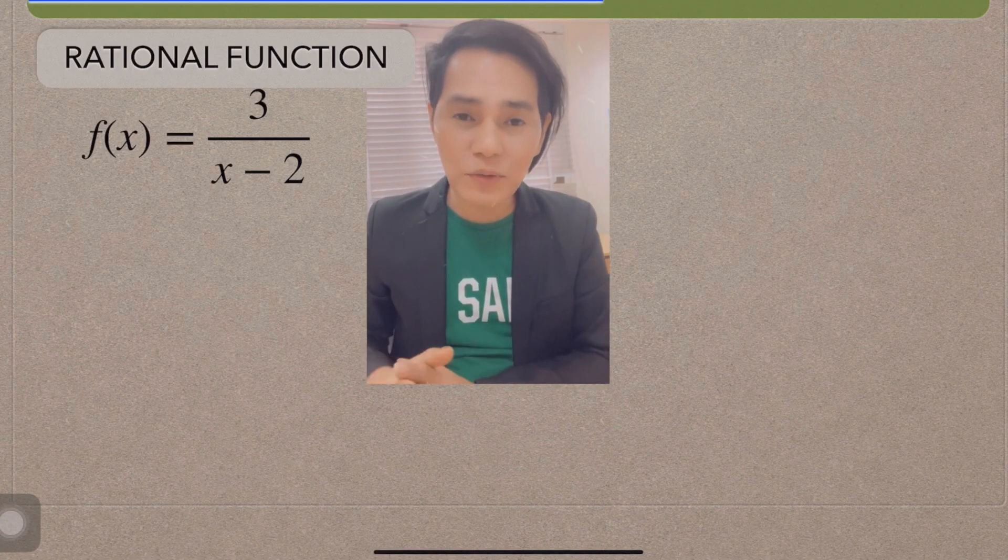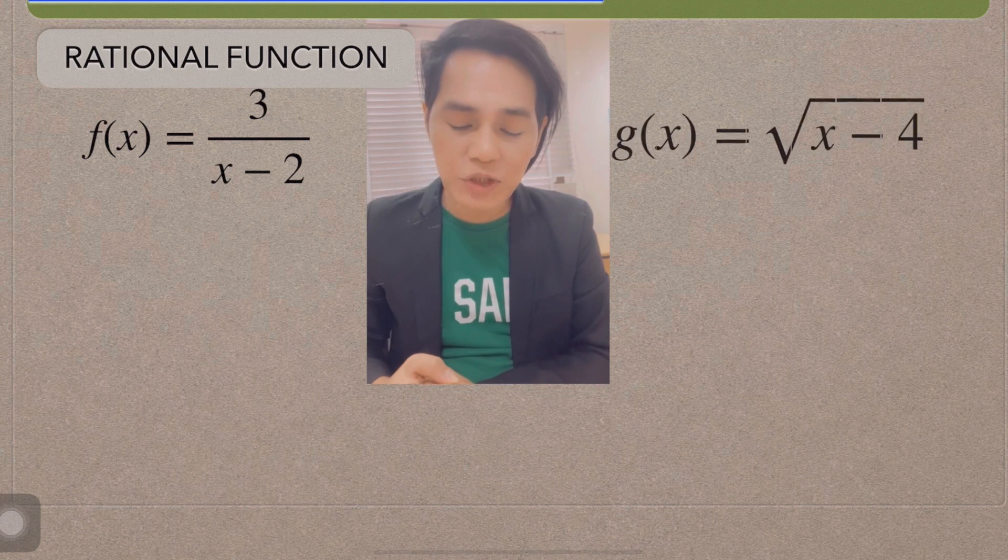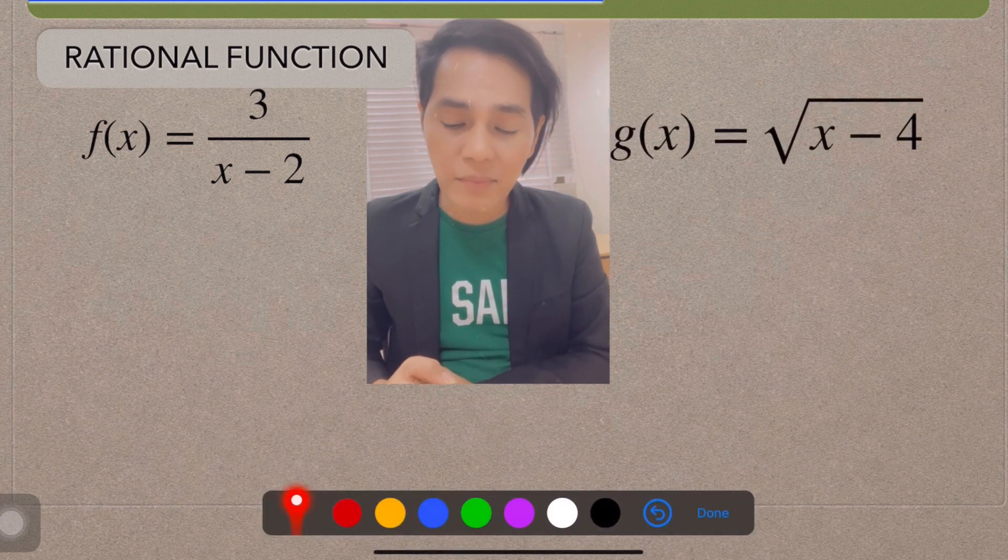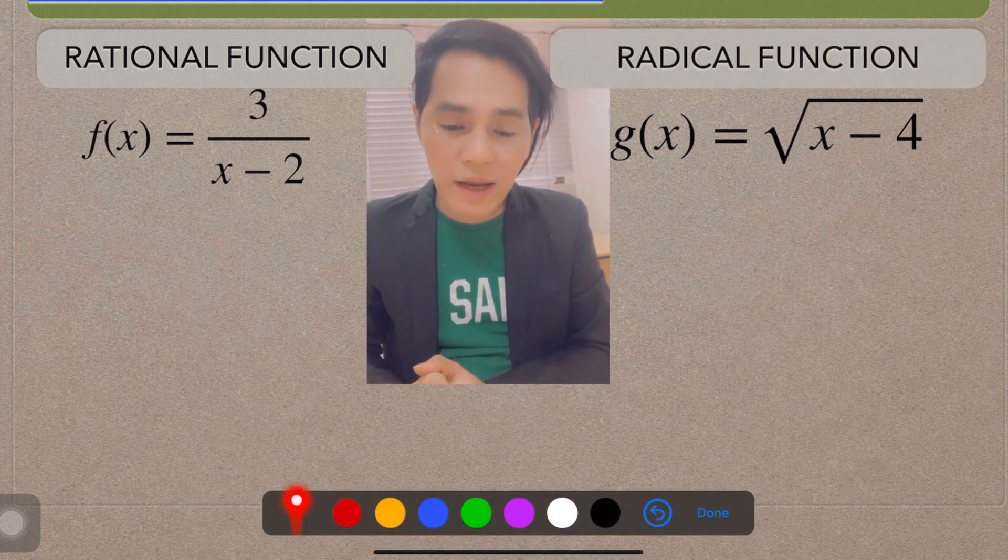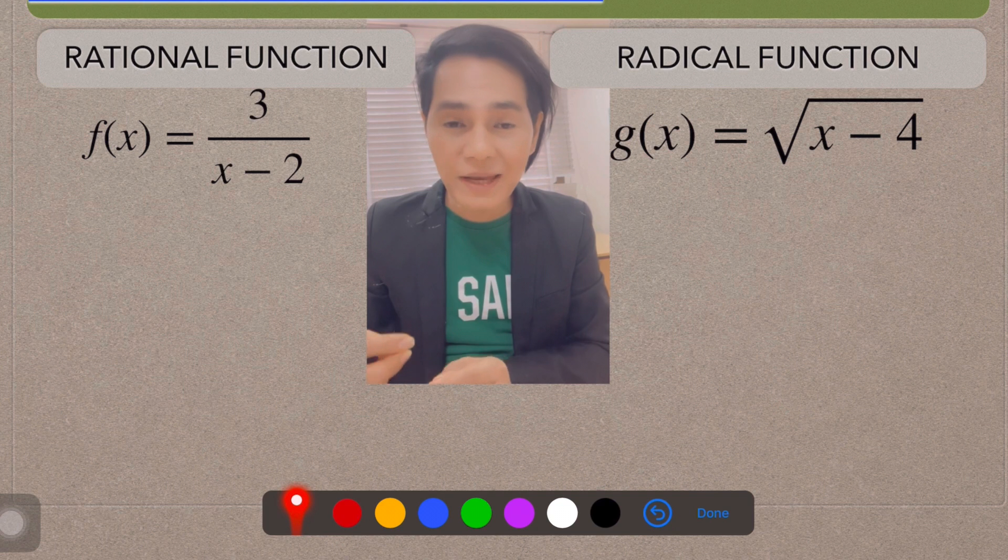Now I have here another function. Look at this. This g(x) is equal to the root of x minus 4. Do you recognize this function? And this is an example of a radical function, wherein finding the square root of a negative number is not possible here. For example,